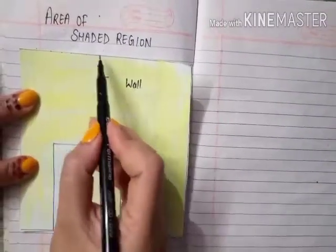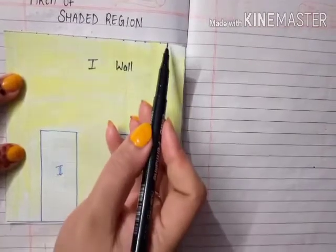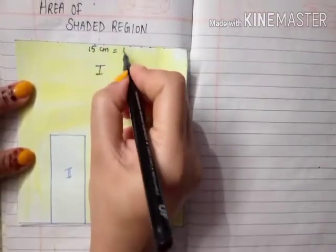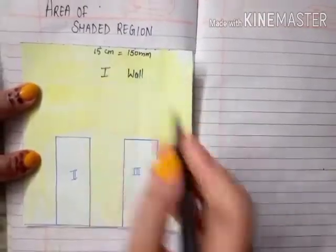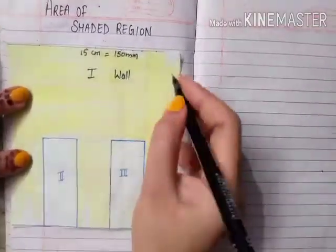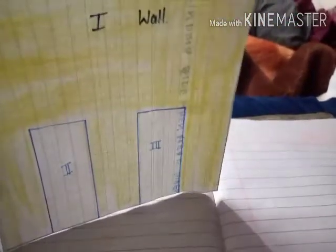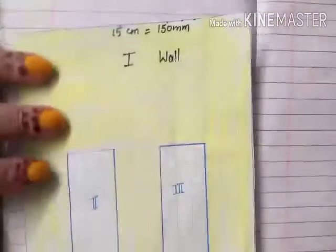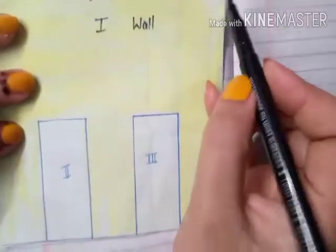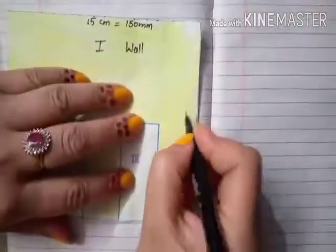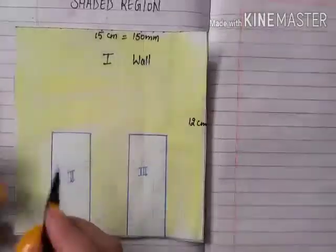Counting along the wall: one, two, three, four, five, six, seven, eight, nine, ten, eleven, twelve, thirteen, fourteen, fifteen — so the length is 15 centimeters, or we can say 150 millimeters. For the breadth, which is the height of the wall, counting: one, two, three, four, five, six, seven, eight, nine, ten, eleven, twelve — the height of the wall is 12 centimeters.